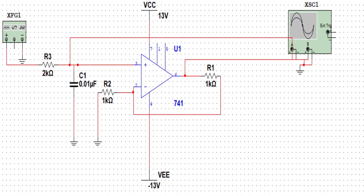This is the circuit diagram of the Butterworth low pass filter. A 2k ohm resistance is connected in series with a 0.01 microfarad capacitor, and the output of the capacitor is given as the input to the non-inverting terminal which is pin 3. There are 2 feedback resistors of value 1k ohm in a negative feedback configuration. Vcc is given at pin 7 with a value of 13V, VEE is given at pin 4 with a value of minus 13V, and the output is taken from pin 6 and connected to an oscilloscope. The input is given to the resistor from a function generator.